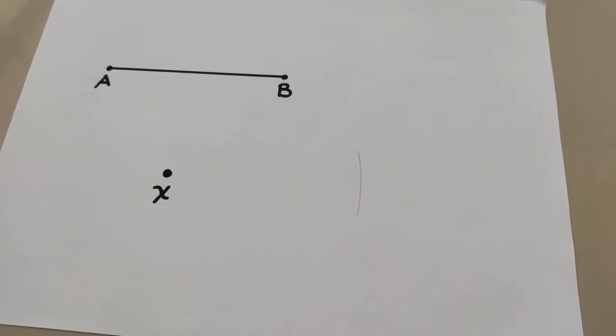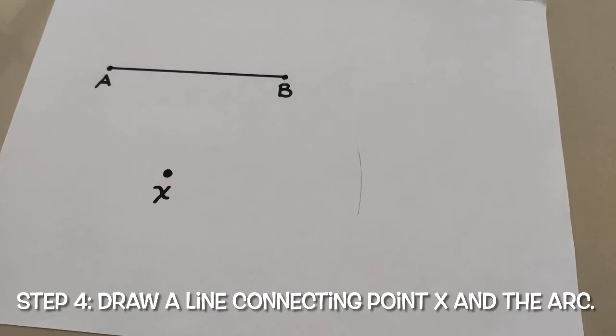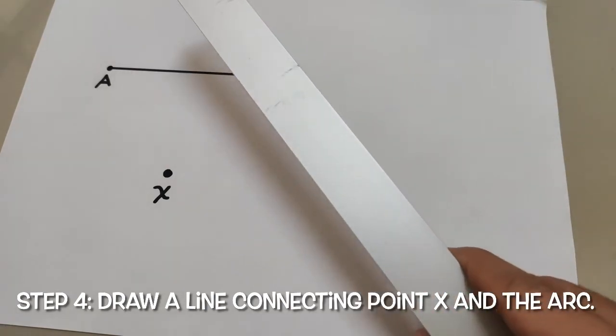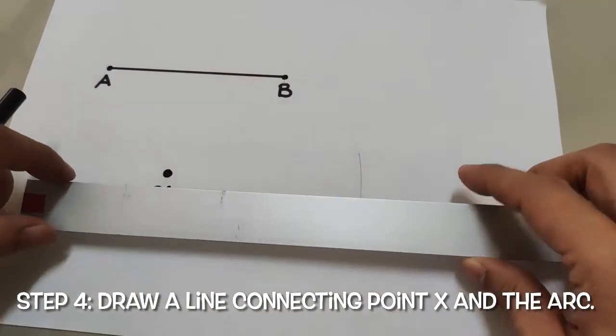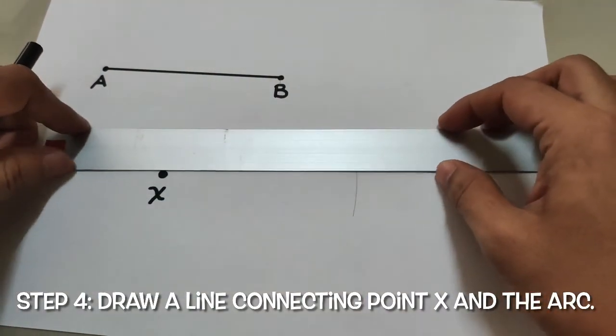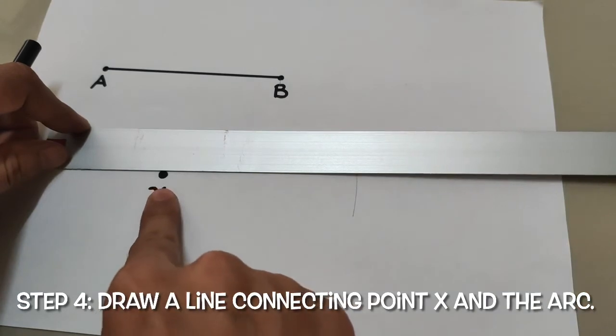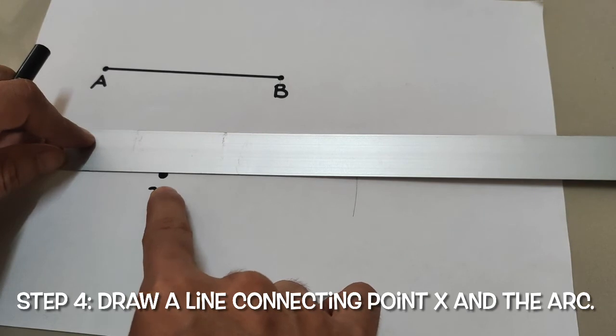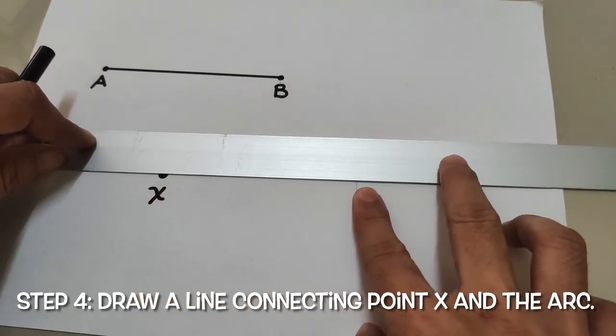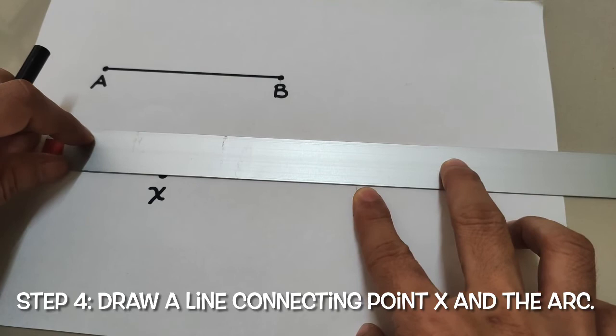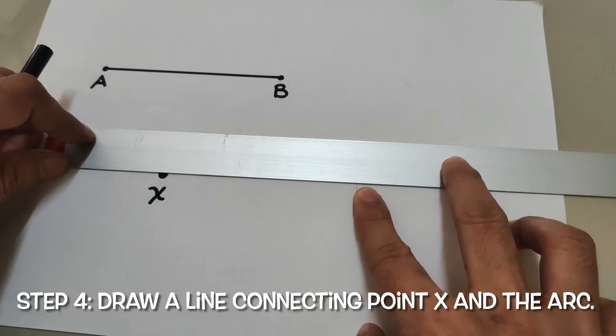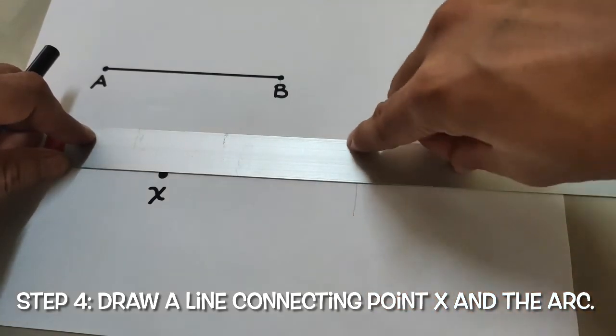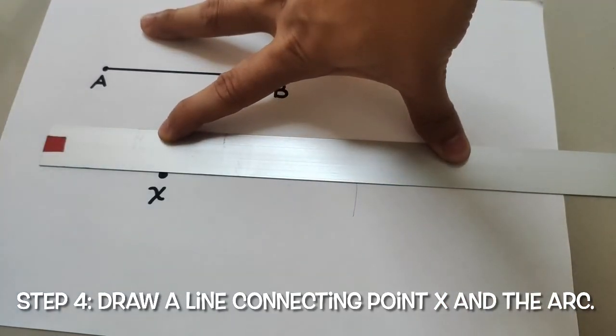Now our next step: get your straight edge from the point you constructed earlier and draw a line towards the arc. I'm going to draw a line connecting the arc and the point.